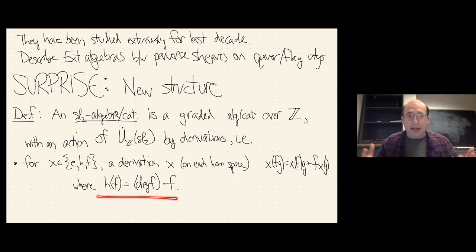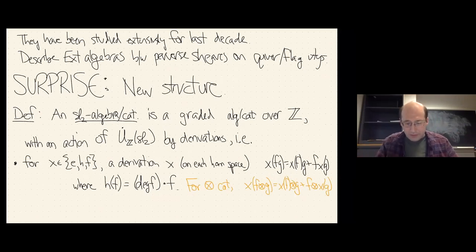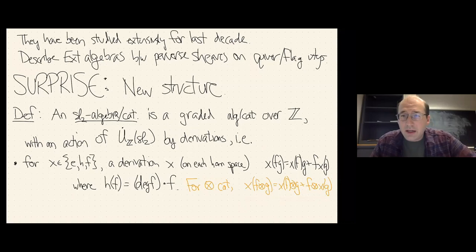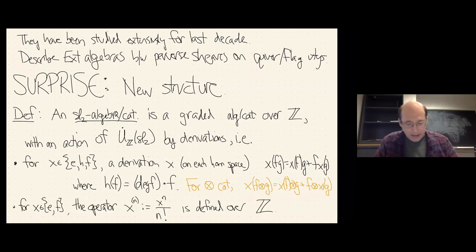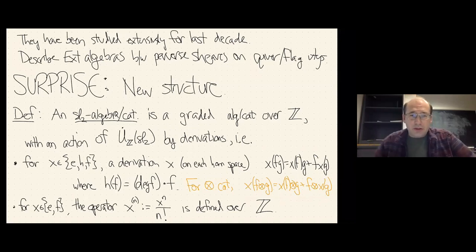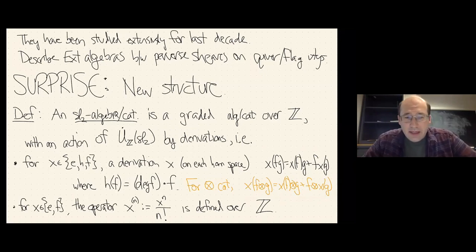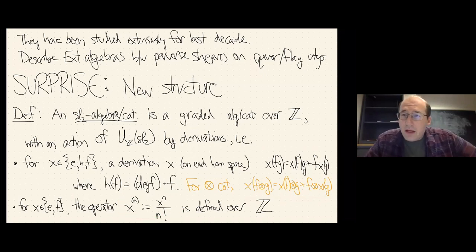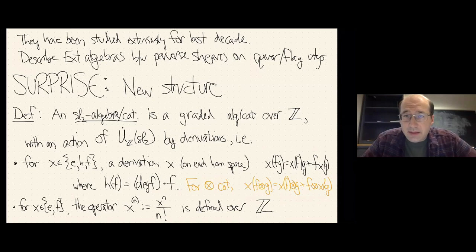Each of E, H, F acts as a derivation on the algebra, or if you're in a category, on each Hom space. It's a derivation in the sense that it satisfies the Leibniz rule for composition. I require the grading to be compatible with this action. Moreover, in a tensor category, I want the Leibniz rule to hold for horizontal composition as well as vertical composition. There's an integral form of the universal enveloping algebra generated by projections to weight spaces and by divided power operators — E^(n) or F^(n) is just E^n over n factorial — and I require these to act integrally.